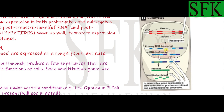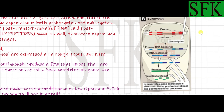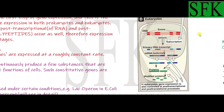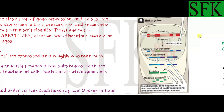In eukaryotes, even at these post-transcriptional and post-translational stages, the gene product can be controlled. If these modifications are inhibited, the final functional protein or functional mRNA will not be formed. The key takeaway is that in prokaryotes, gene regulation is done mainly at the transcription level only, while in eukaryotes the control can be at the transcription level, as well as at the post-transcriptional and post-translational levels.